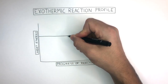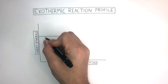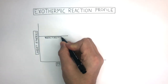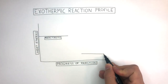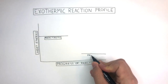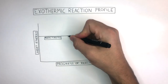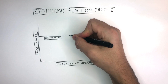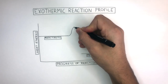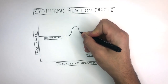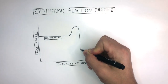On any reaction profile, the first line always represents the reactants, and the second line always represents the products. On an exothermic reaction profile, the line continues from the reactants going upwards, and then it goes back down to the products.